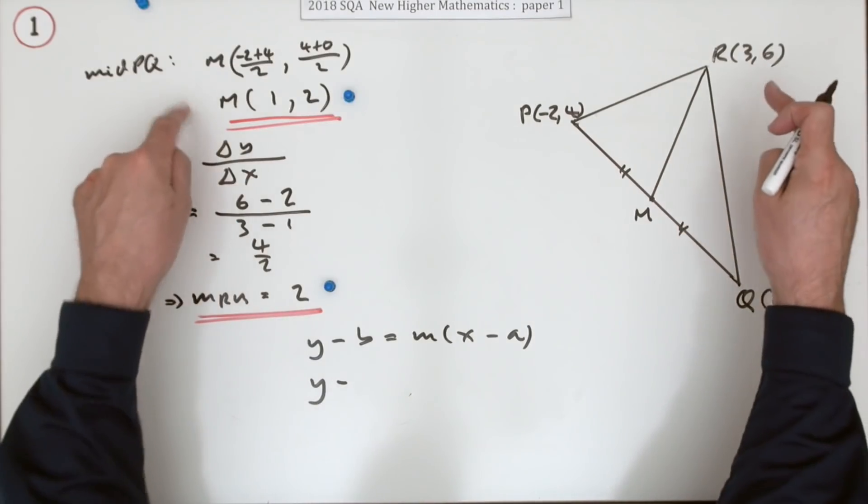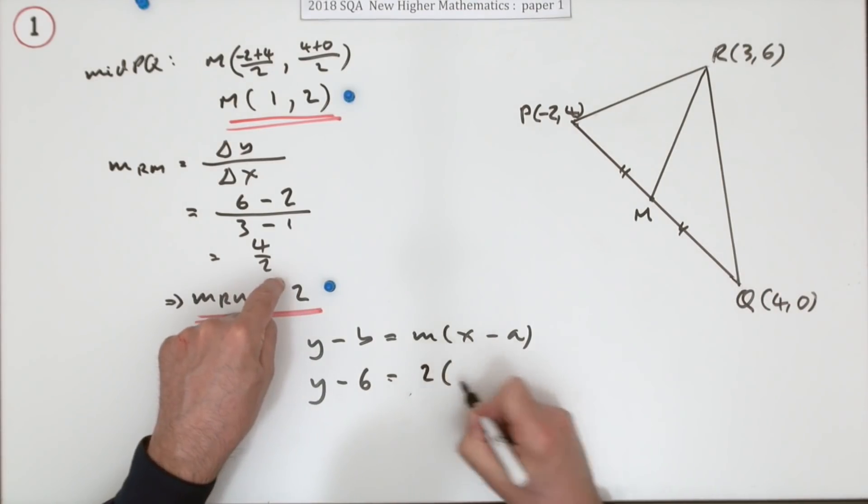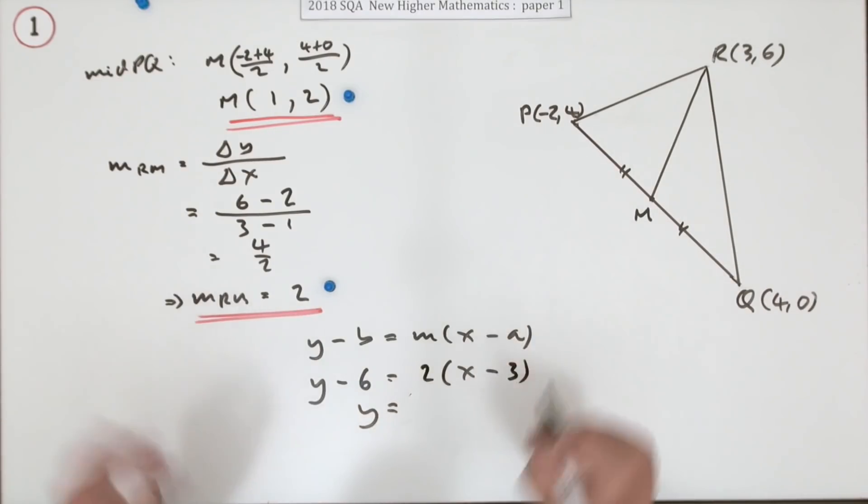It's y minus the y coordinate. Now you pick either point. I'll just take the original one. y minus the y coordinate as the gradient, which was 2, times x minus the x coordinate. No fractions. Very nice. Just multiply that out. 2x minus 6.